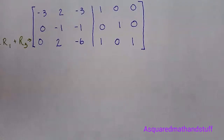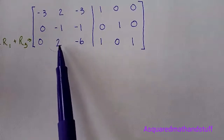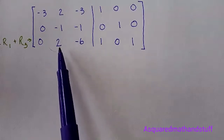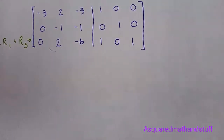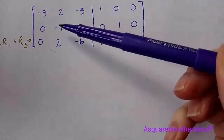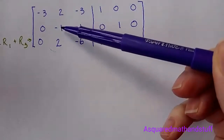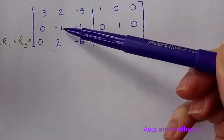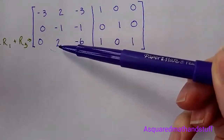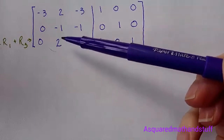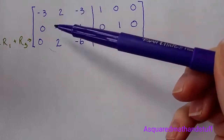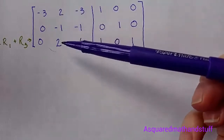Now let's go ahead and work on converting this 2 into a 0. In order to do that, we will take 2 times row 2 and then add it to row 3. So let me go ahead and rewrite rows 1 and 2.